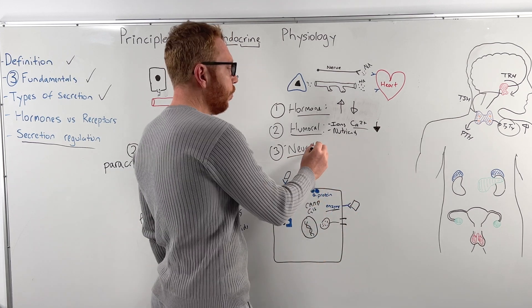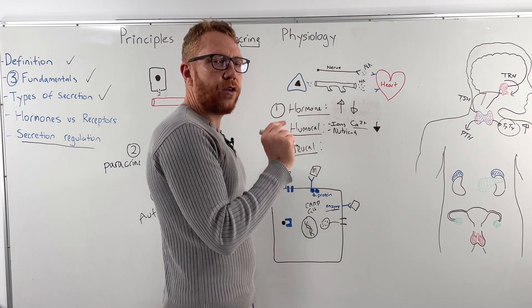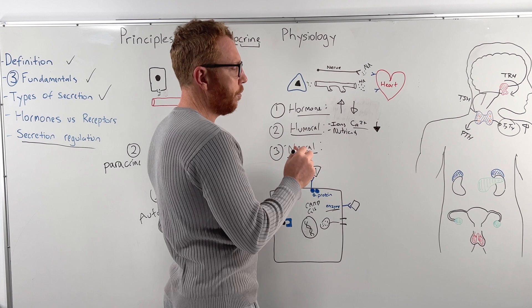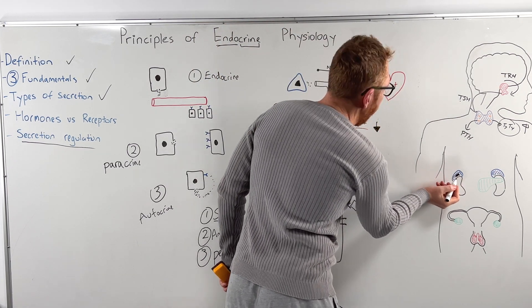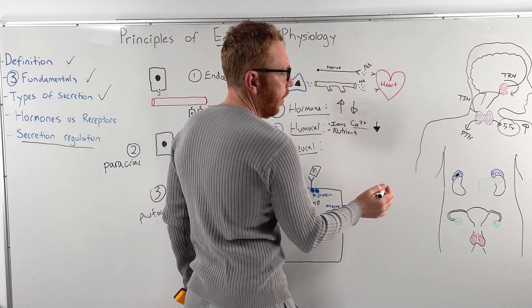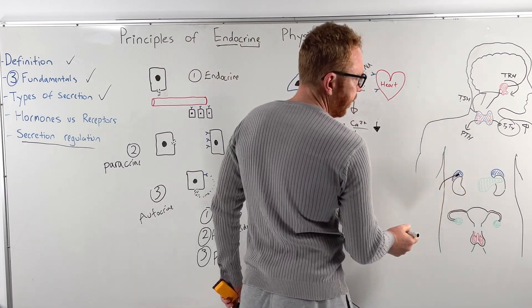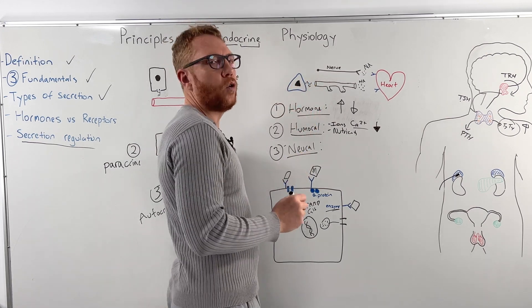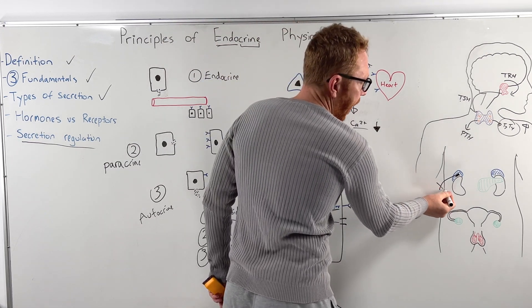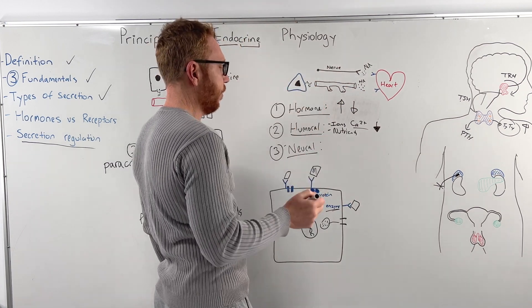And then finally we have neural, which is basically direct nerve stimulation to the hormone area. So if we have the adrenal medulla, which is in here, which we saw that releases noradrenaline, we have nerves that go directly to that, stimulates it and tells it to release its hormone into the blood. When that action potential turns off, then that turns off.